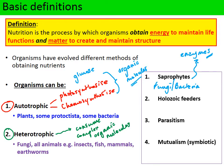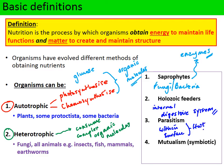Holozoic feeders have to ingest complex organic molecules and then digest them in a very specialised internal digestive system. Our digestive system as holozoic feeders includes the oesophagus, the stomach, the small intestine, and the large intestine. Parasitism is another mode of nutrition whereby the organism lives within or on the surface of a host organism. The parasite always obtains nourishment from the host at the expense of the host's health, always causing harm and occasionally even death to the host.